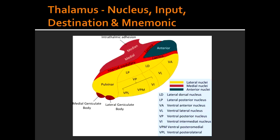The VPM (Ventral Posterior Medial Nucleus) gets its input information from the trigeminal and gustatory pathways. The VPM receives face sensation and taste information, and the end destination of that information is the primary somatosensory cortex.